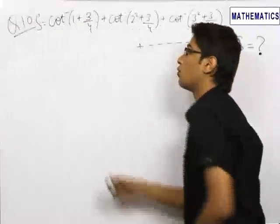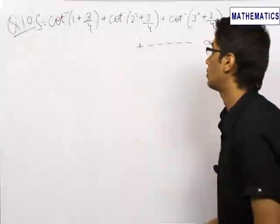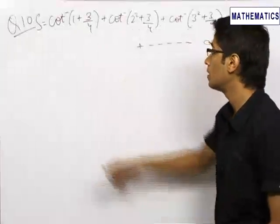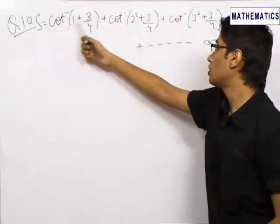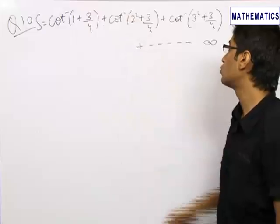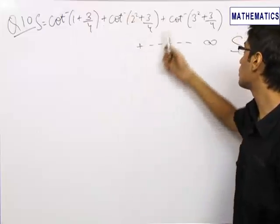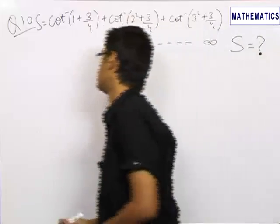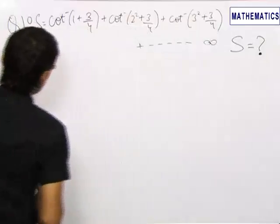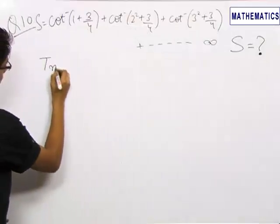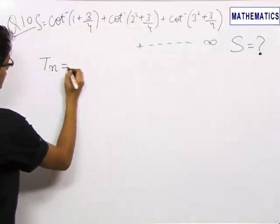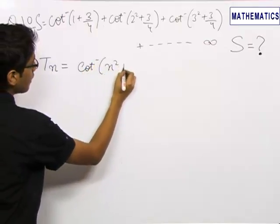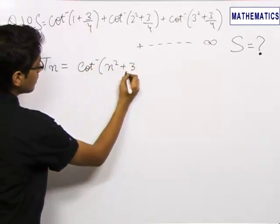This is a very interesting and the most important question in the inverse trigonometric chapter. We are required to find the sum of cot inverse of (1 + 3/4) plus cot inverse of (2² + 3/4) plus cot inverse of (3² + 3/4) up to infinity. The first thing we do is write the nth term of this series, which is cot inverse of (n² + 3/4).